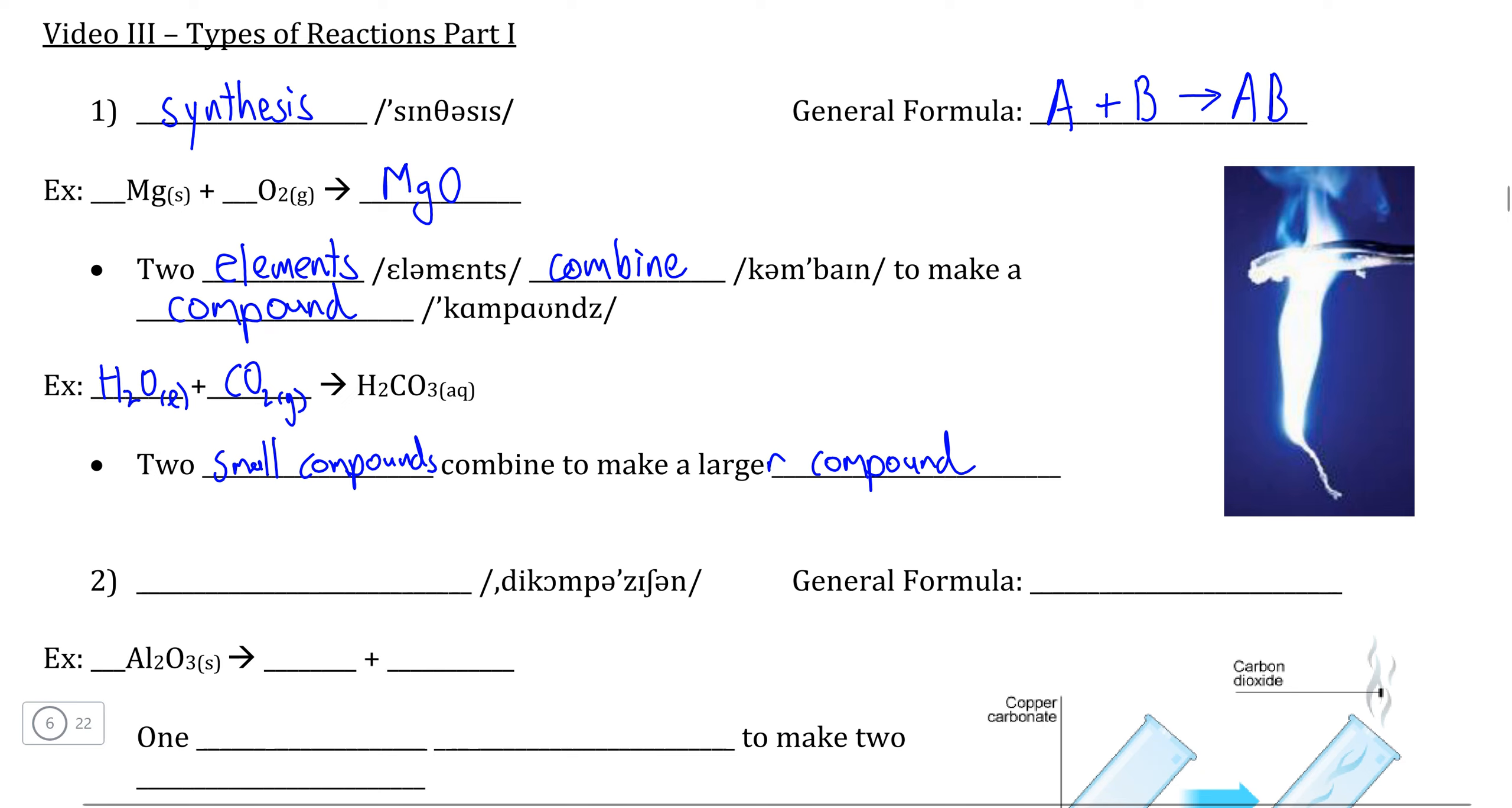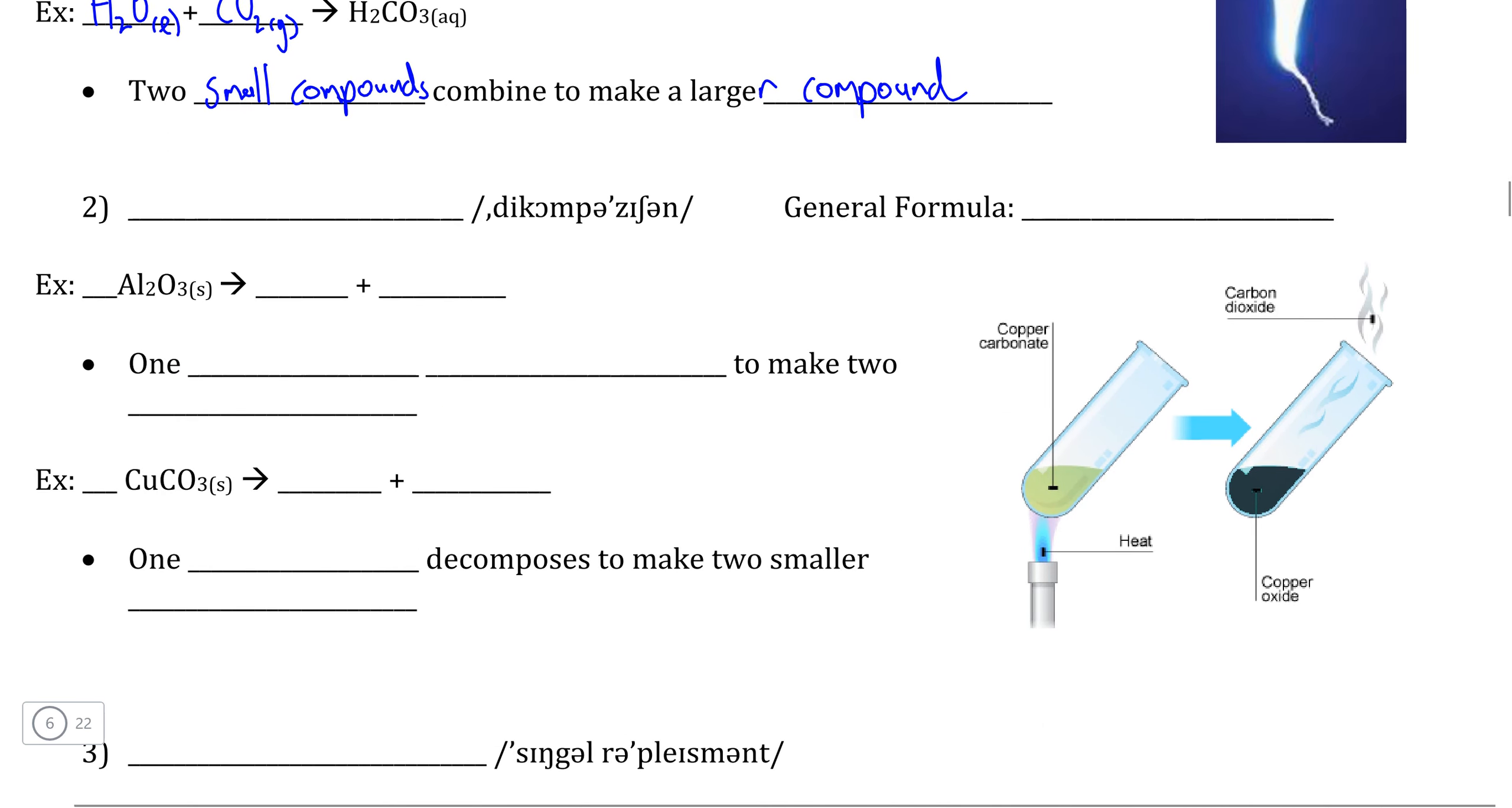However, because this reaction still follows the A plus B goes to AB, we can also classify this as a different type of synthesis reaction. Logically, the next type of reaction that we're going to learn about is what we call the decomposition reactions.